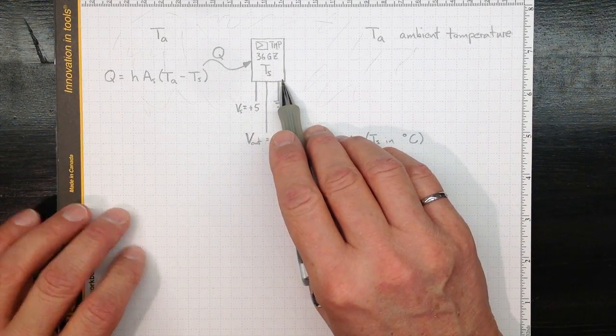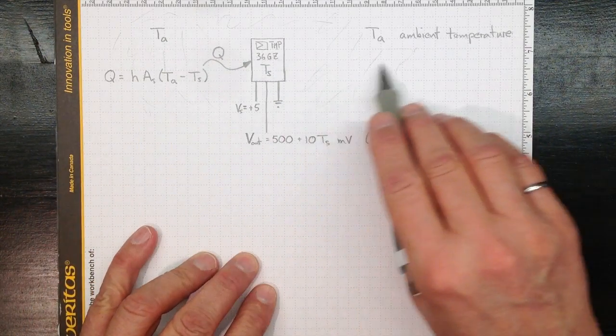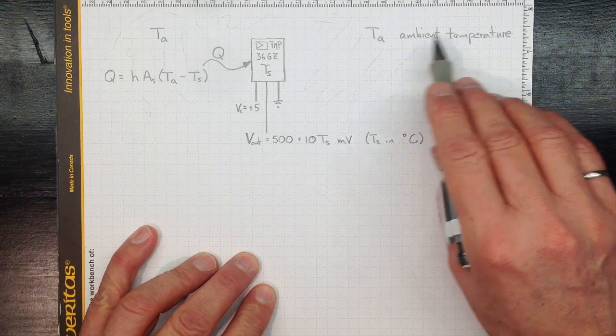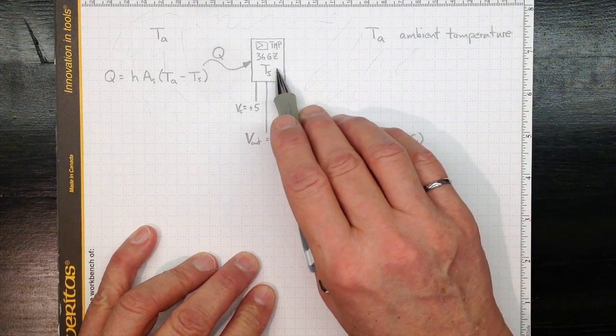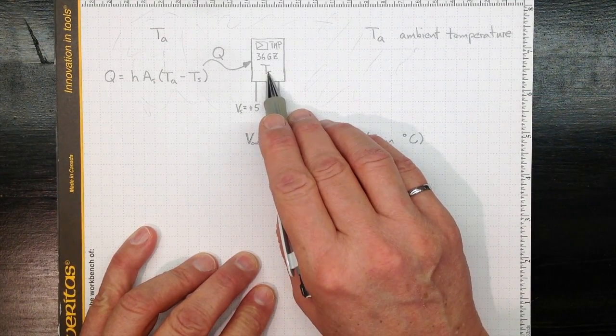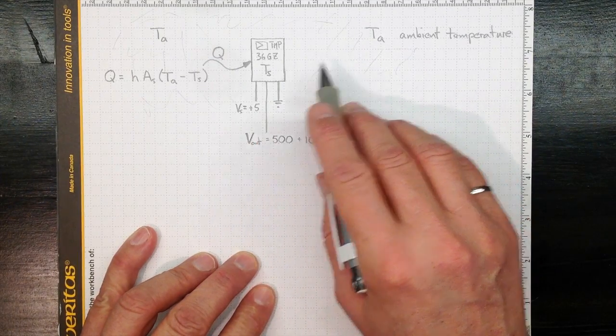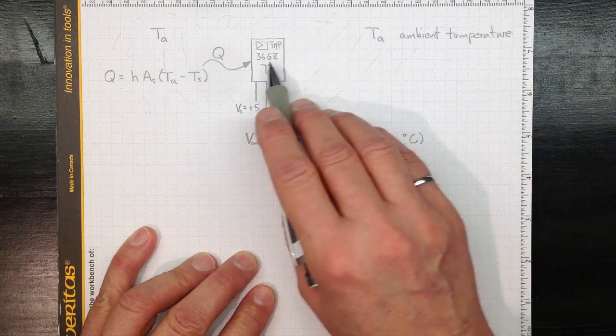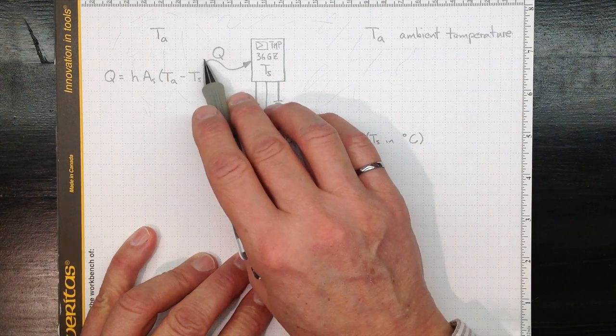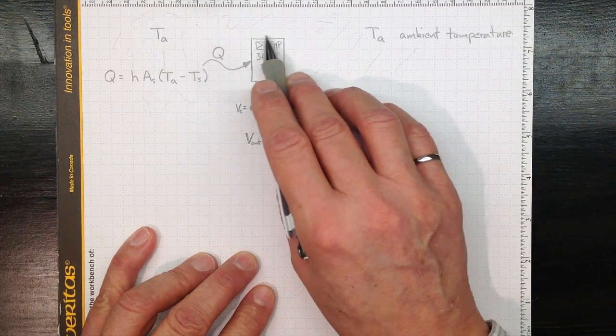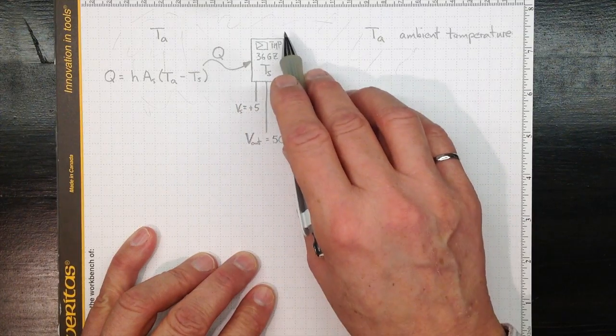Here's our TMP-36. It's in an environment at an ambient temperature T sub A, but it hasn't reached that temperature yet. Its temperature is T sub S, so something different from T sub A. If T ambient is bigger than TS, then there's going to be heat transfer into our little package TMP-36.